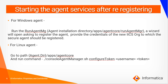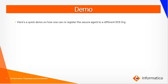For a Linux agent, go to the path: secure agent installation directory, apps, agent code. Here, run the command: ./consoleagentmanager.sh configure token. Now let me show you a quick demo on how you can re-register the secure agent to a different IACS org without having to reinstall it.